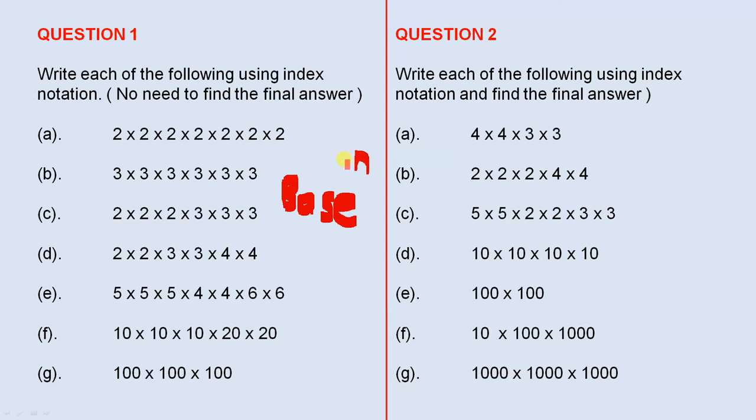For example, I'll just give you a quick example: 2 times 2 times 2 equals 2 to the power of 3. And there's your index notation. So there's your base, and there's your power, or your index or your exponent. So that's what you have to do with all of those.